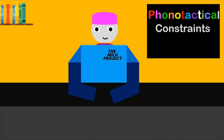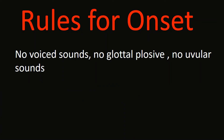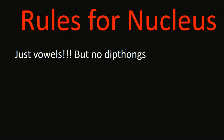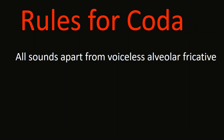When deciding on rules for the constraints of your language, you need to consider all three sections of a syllable. With phonotactics, you have a lot of choice with what you do — you could even omit the onset or nucleus, although normally it's best to make them optional. In my conlang, in the onset, there are no voiced uvular or glottal sounds, apart from the glottal fricative, or the English 'h' sound. In the nucleus, I have decided to just use vowels, as in my language there are no diphthongs. And in the coda, all sounds except the voiceless alveolar fricative are allowed. My language does not have any consonant clusters, but if you would like to make a conlang that does, I would recommend listing all your consonants and deciding which pairs or trios you would like.